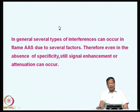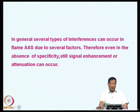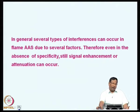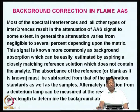In general, several types of interferences can occur in flame AAS due to several factors. Therefore, even in the absence of specificity, signal enhancement or attenuation can occur. This is what we must understand in atomic absorption—even though it is an element-specific technique, signal attenuation can occur due to various reasons. We will now discuss background correction of flame AAS.